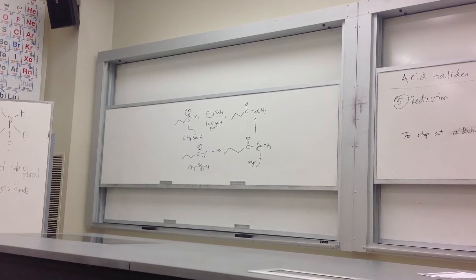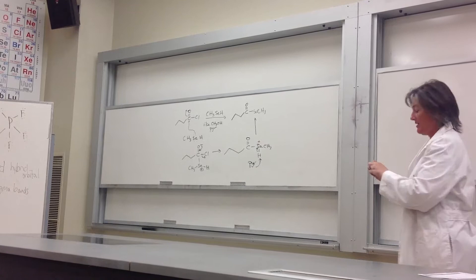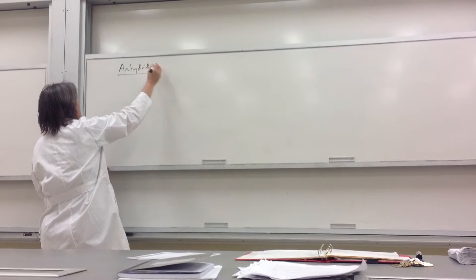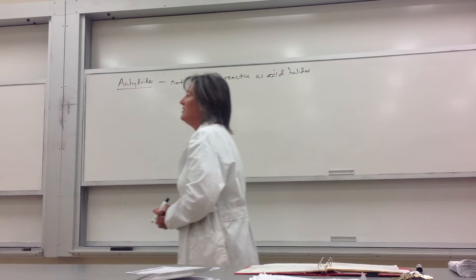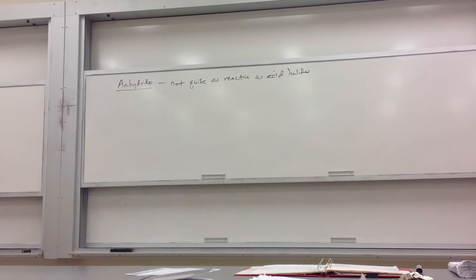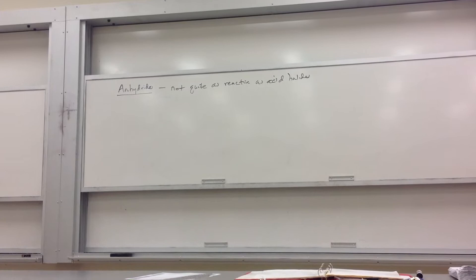Questions on acid halides — those are all the major reactions. Let's do anhydrides. We're working down a reactivity list, and anhydrides are below acid halides — not quite as reactive. What we're going to see, once we get to the reactions, is that a number of them won't need a catalyst. But since they're not quite as reactive, sometimes an H+ catalyst helps.